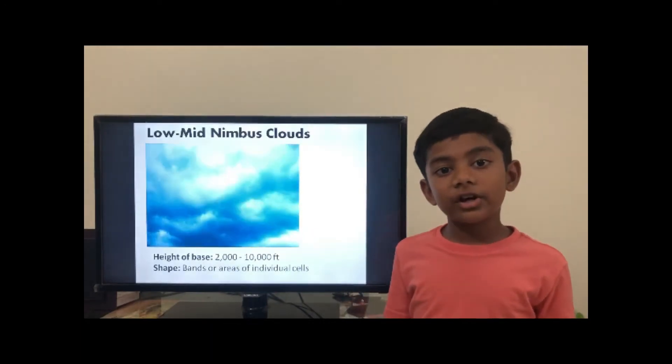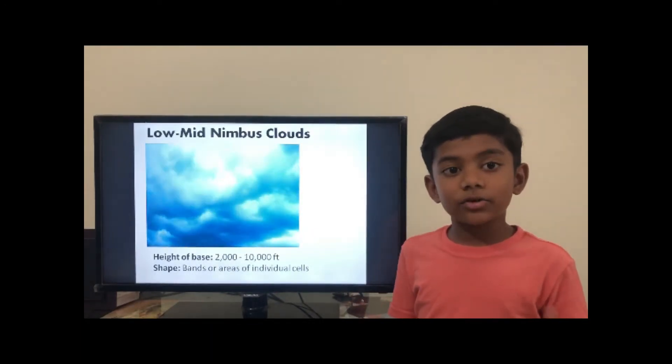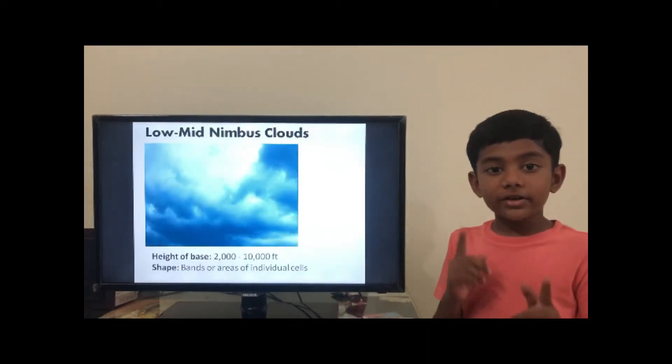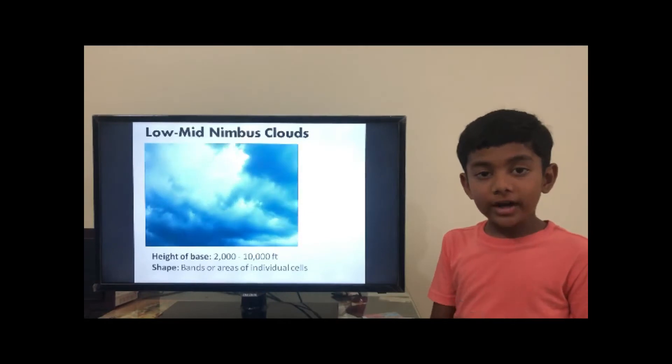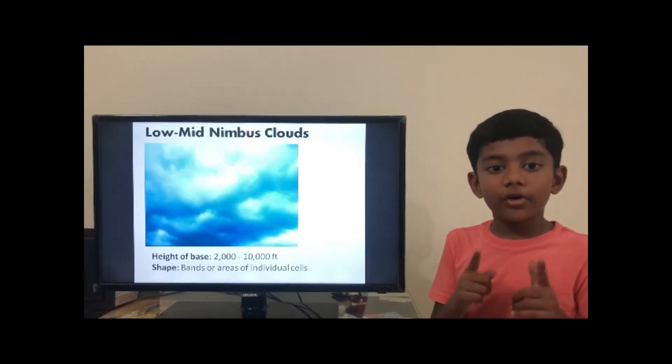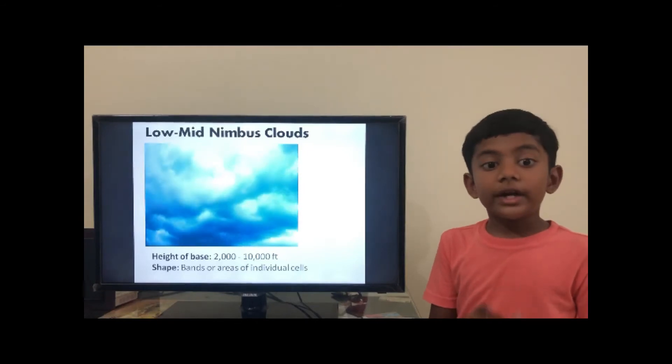Next, let's go to the mid clouds. It is a nimbus cloud, known as the rainy cloud. It is dark and gray, diffused by falling rain or snow. It is thick enough to cover the whole sun.